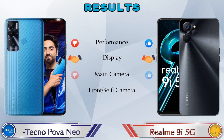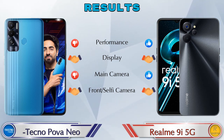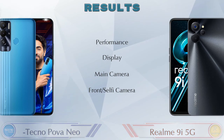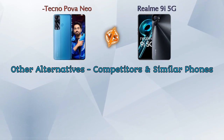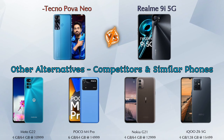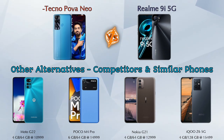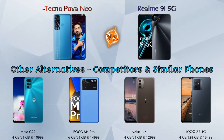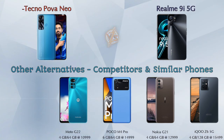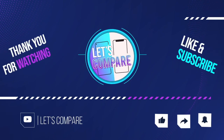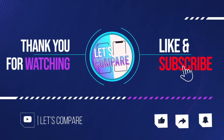For the final result: in performance, the 9i 5G is ahead; in display, both phones are the same; in main camera, the 9i 5G is ahead; and in front selfie camera, both phones are the same. Other competitors at the same price include the Moto G22 4G, Poco M4 Pro, Nokia G21, and iQOO Z6 5G. Details about all competitor phones are available in the description. If you like our video, please like and subscribe. Thanks for watching.